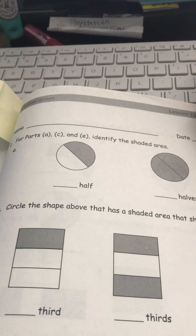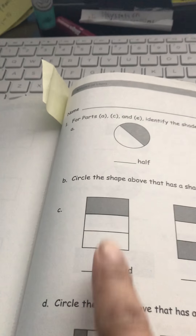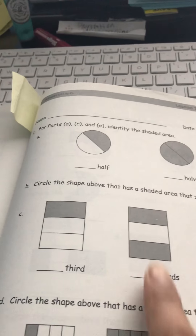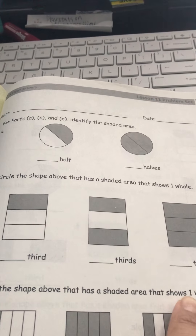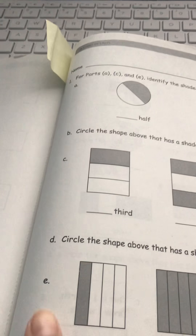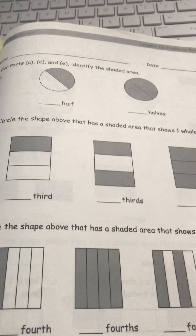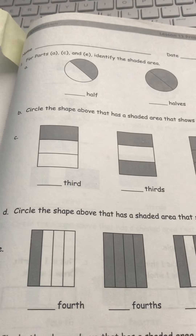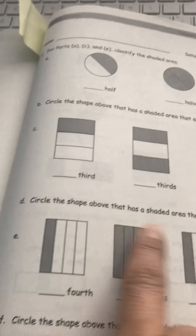Remember, a whole means the entire amount. Then for C, how many parts are shaded in? How many parts are shaded in? How many parts are shaded in? And then circle the shape above that has a shaded area that shows one whole. Which of these shows one whole? Which of these shows one whole?